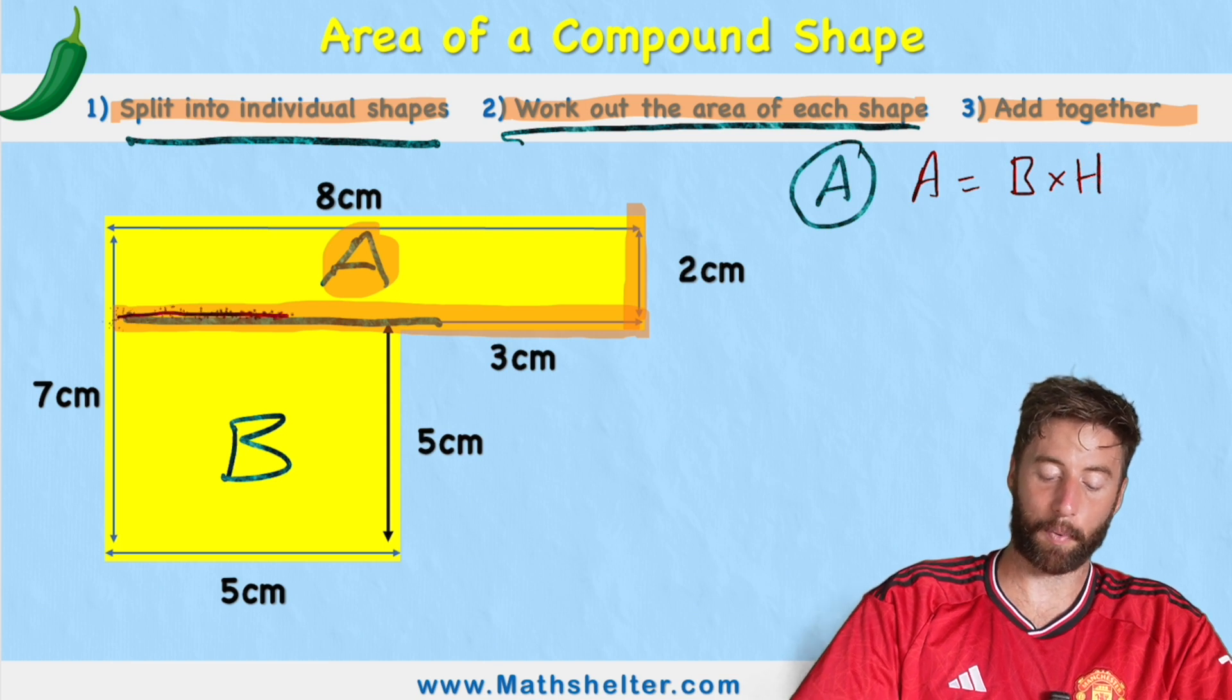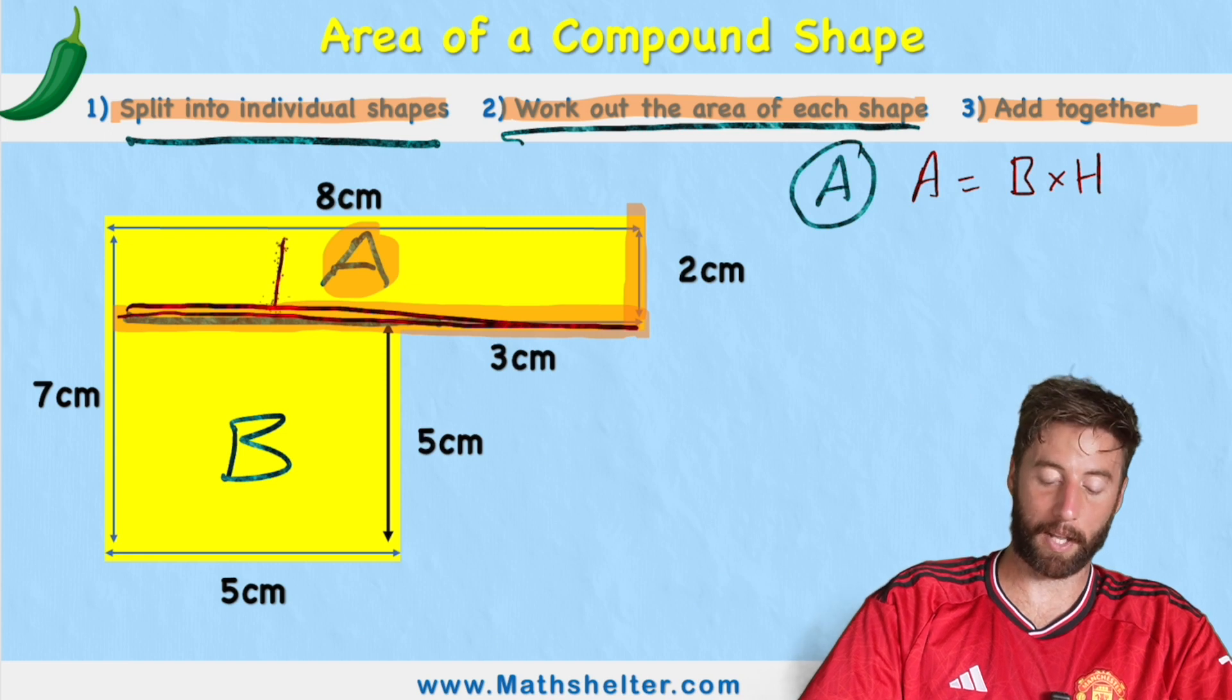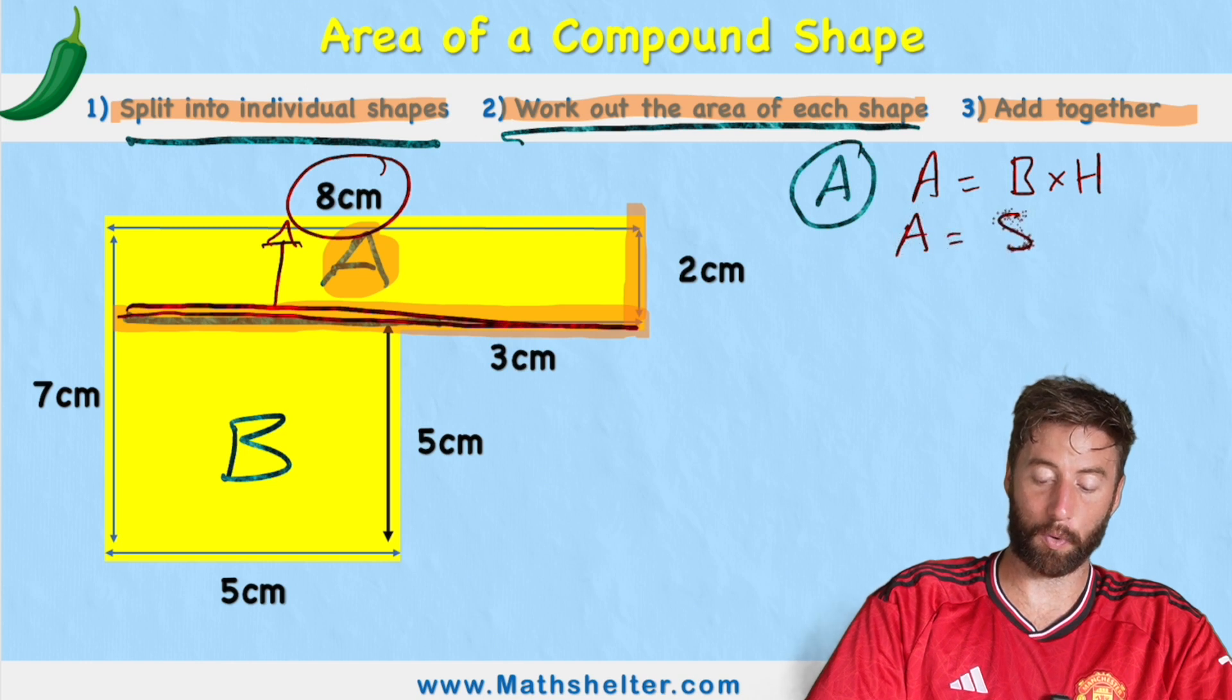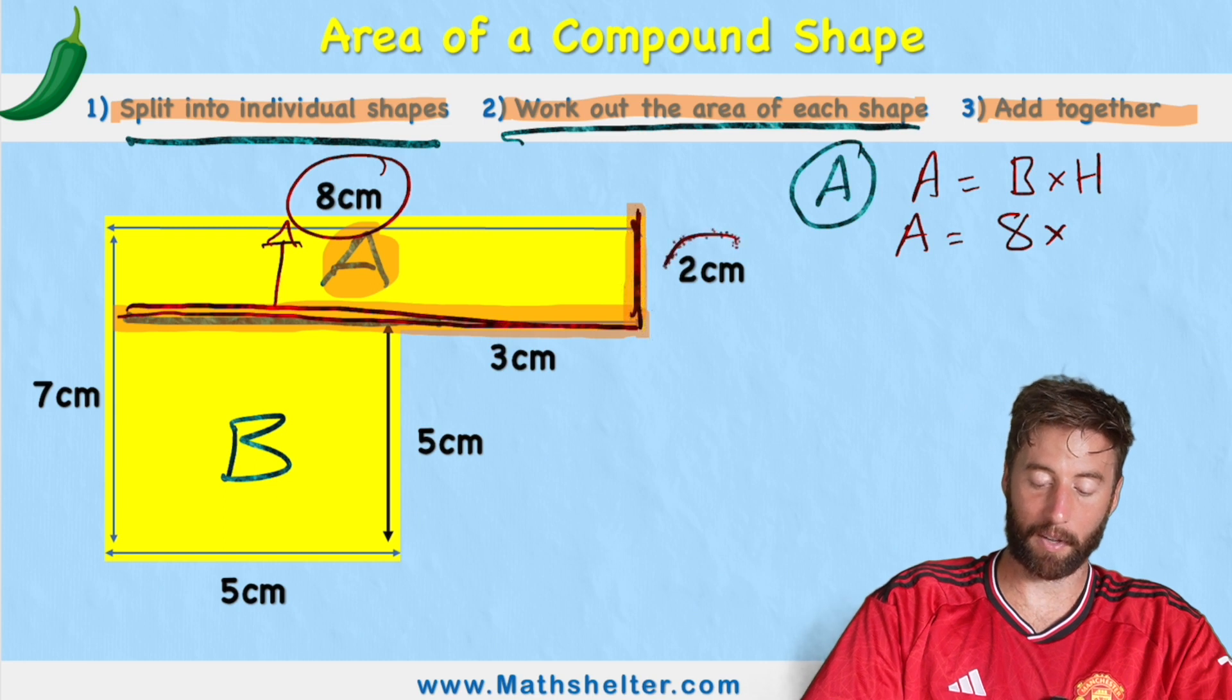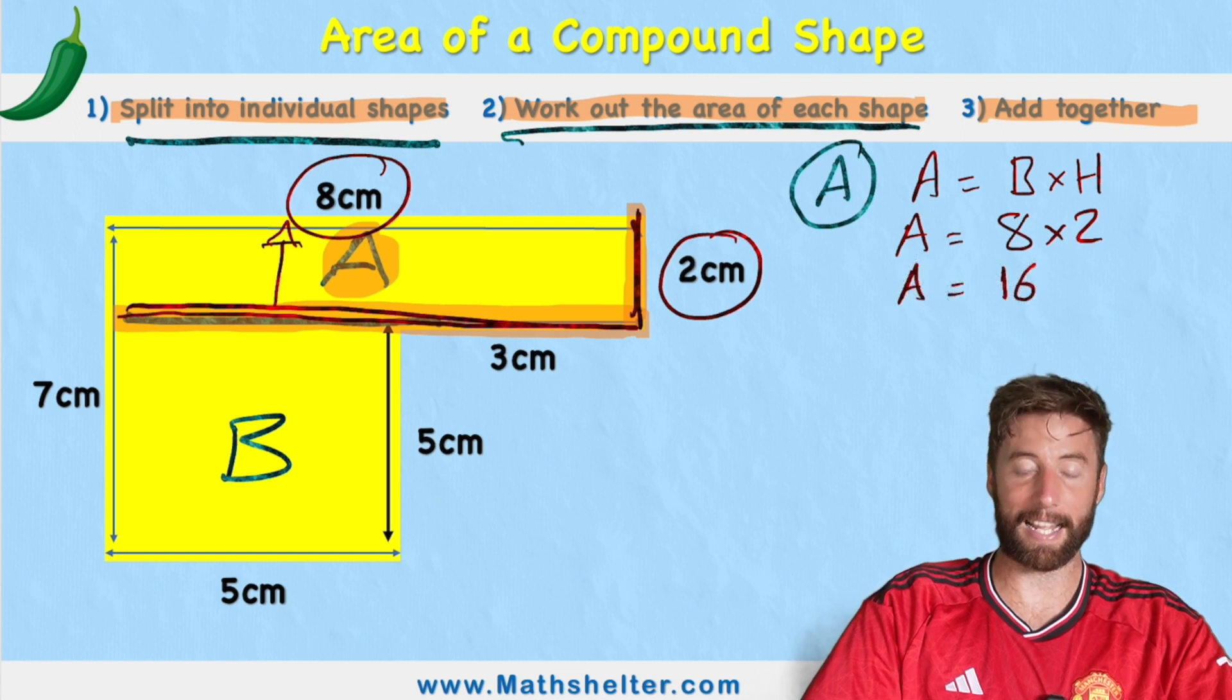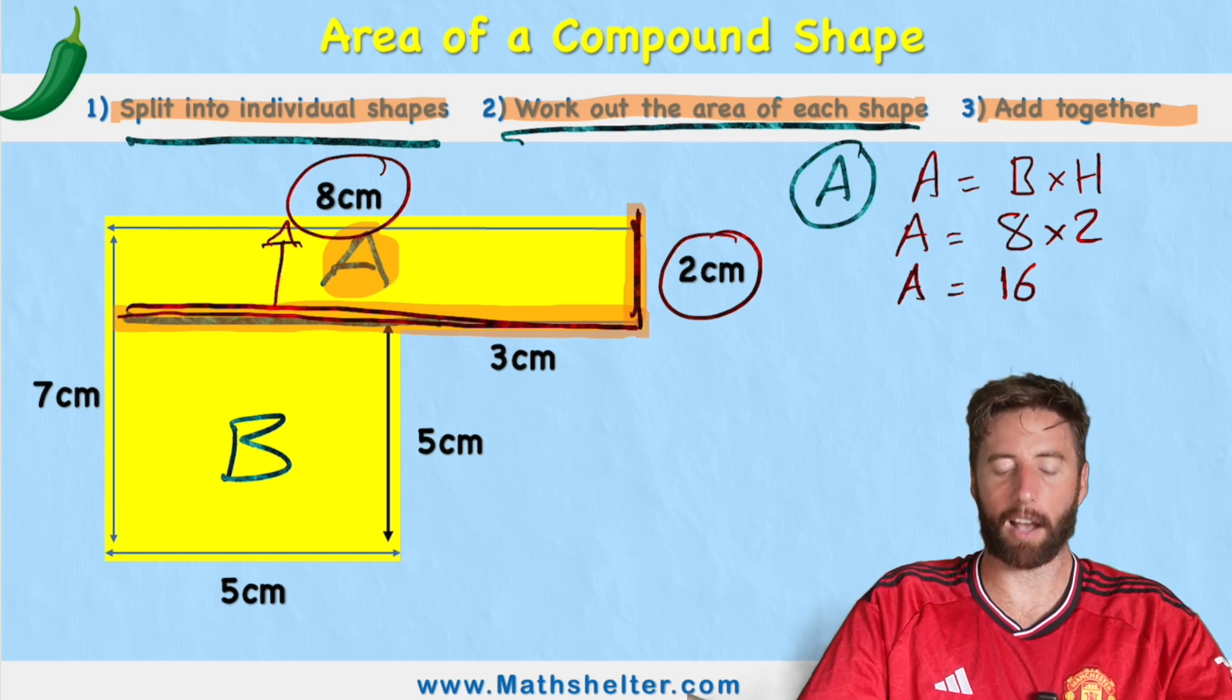So in this case if we look at this measurement across the base how do we find out its measurement? Well let's look opposite and we can see that we have 8 centimeters. So we have area equals 8 times and what's its height? We can see we have the height over here of 2 centimeters. So the area of shape A is 8 times 2 which is 16 but 16 what? 16 turkeys, 16 cars?